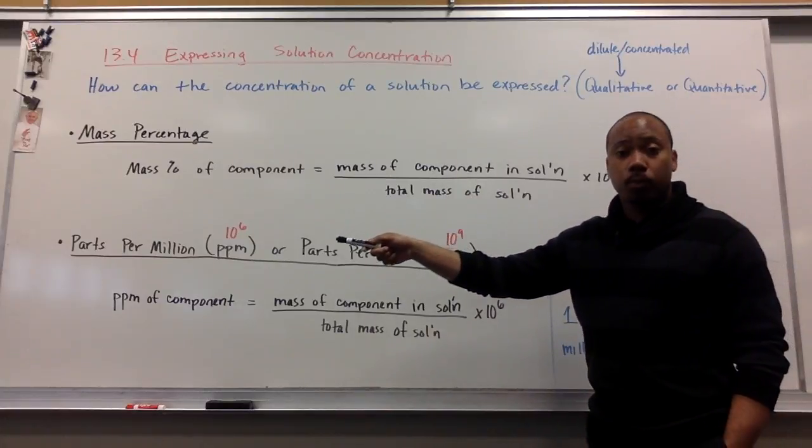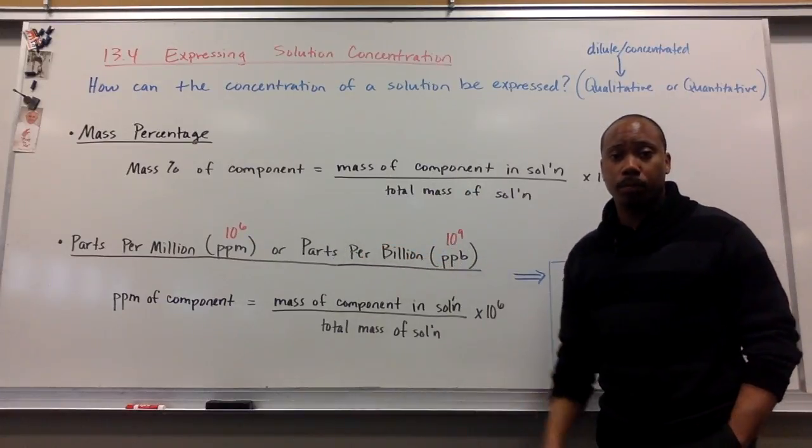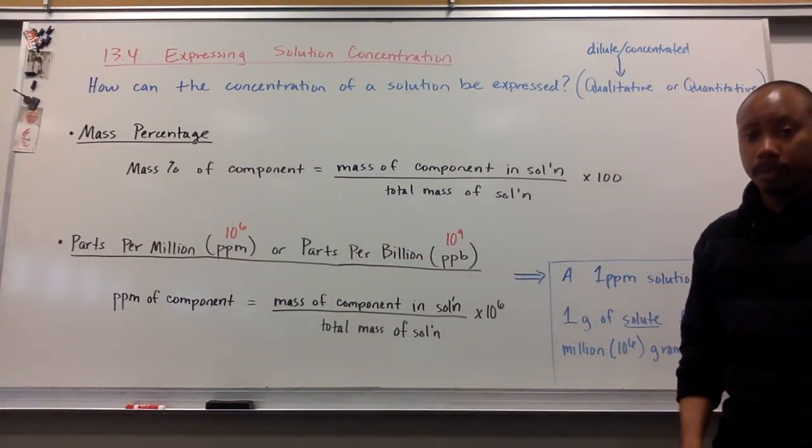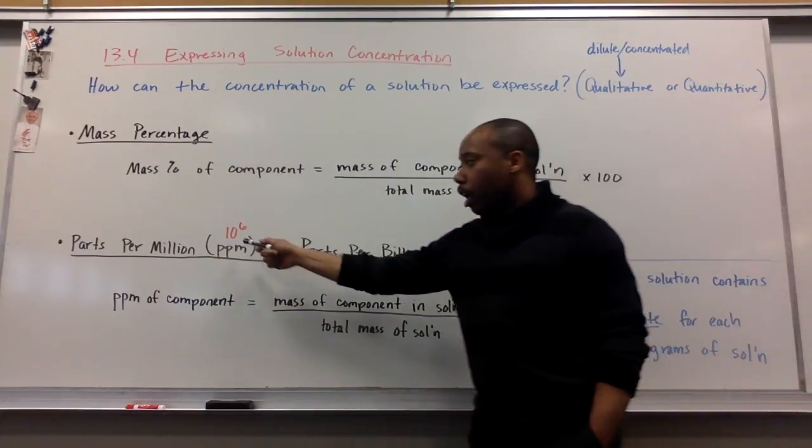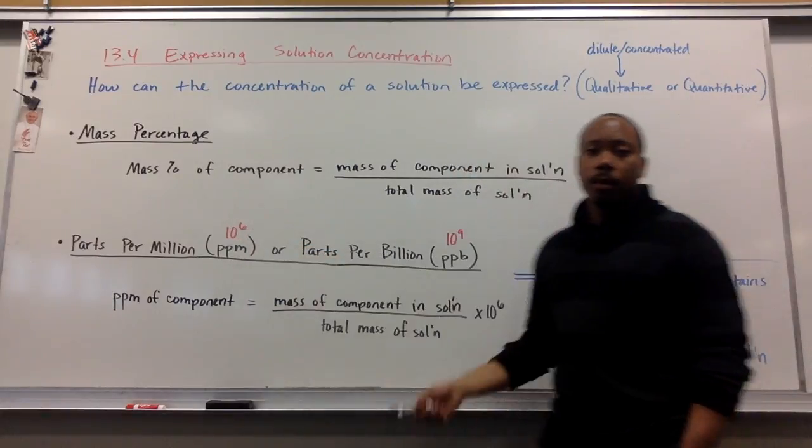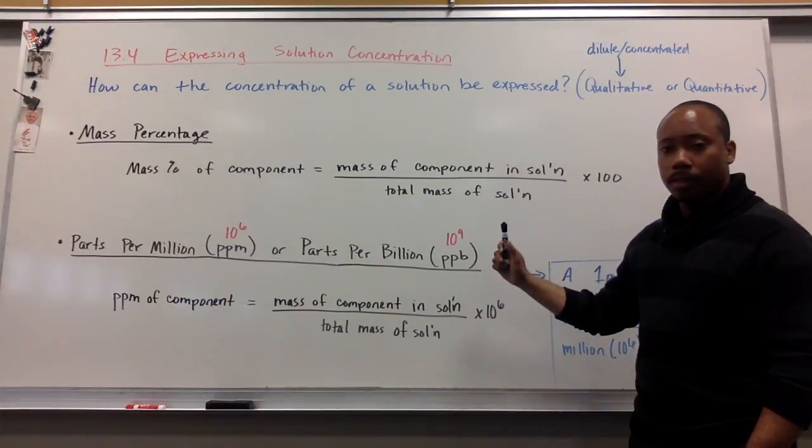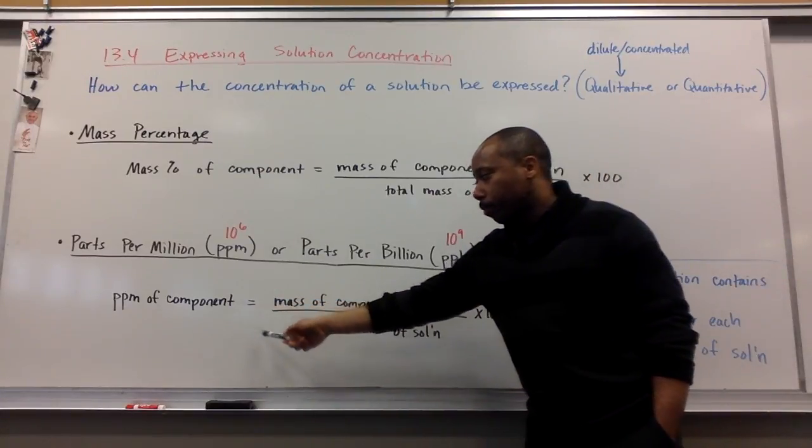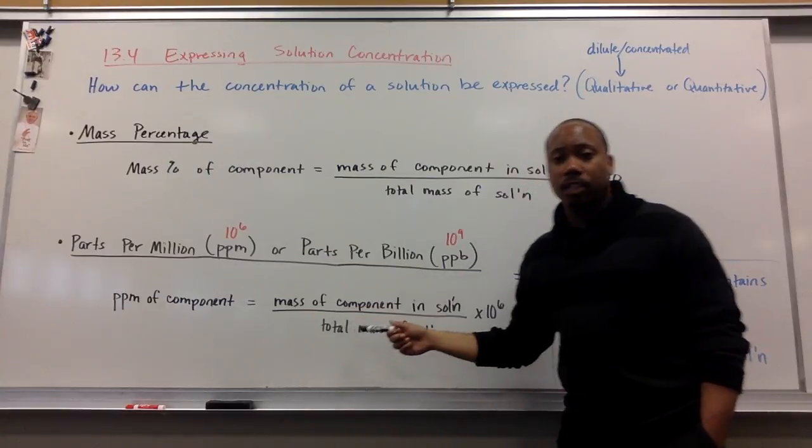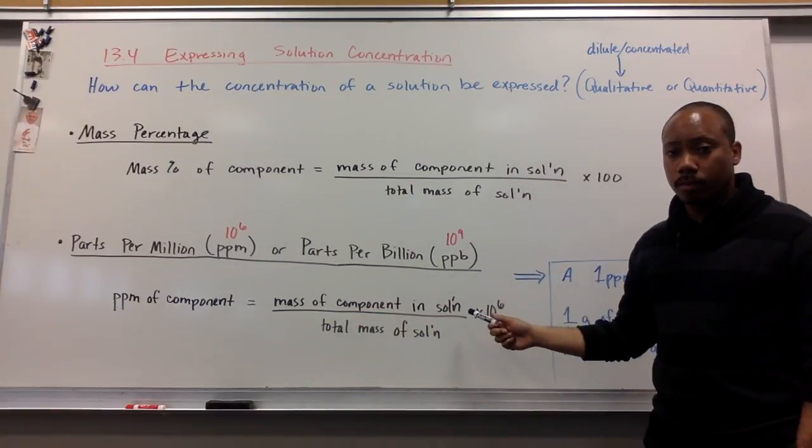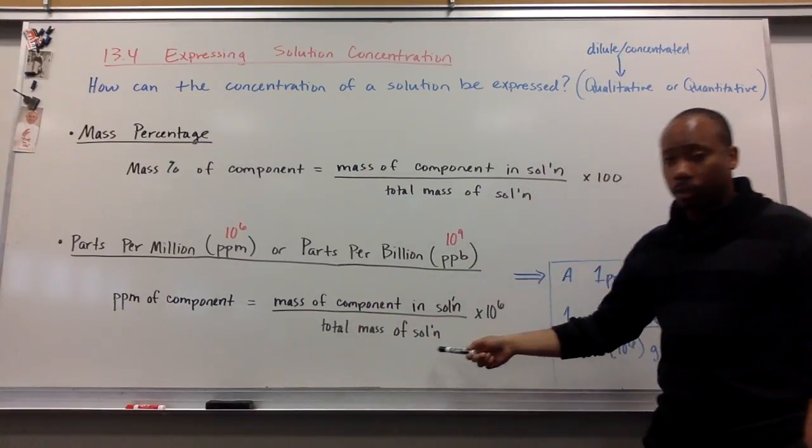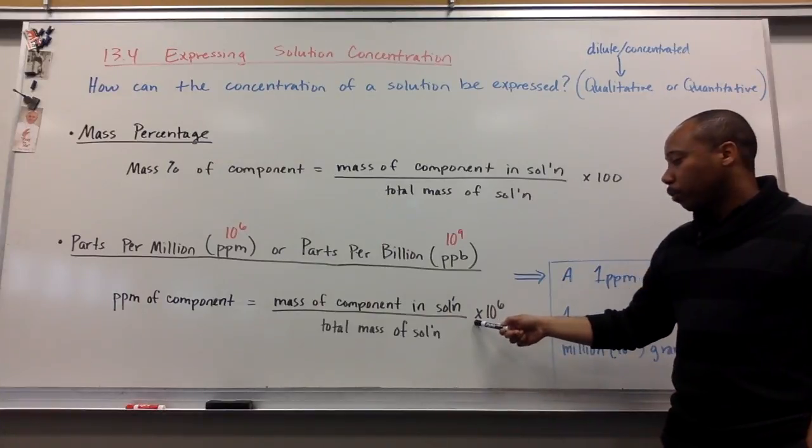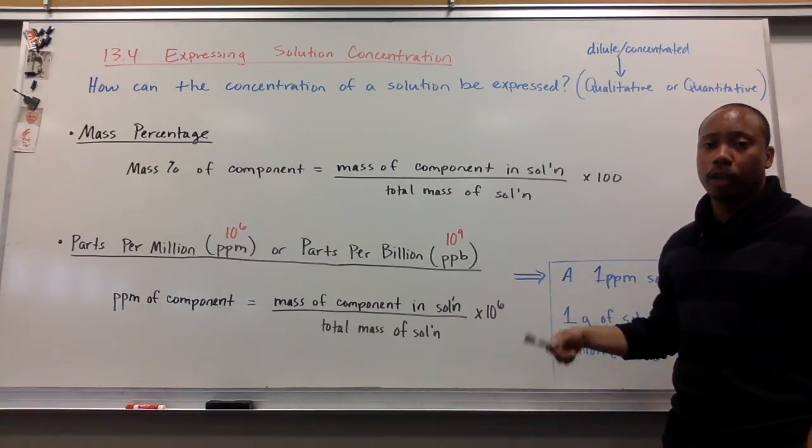A second way to express concentration is parts per million (ppm) or parts per billion (ppb). Parts per million is a magnitude of 10 to the 6th; per billion, 10 to the 9th. Very similar to above, parts per million of a component can be calculated by taking the mass of the component in solution and dividing it by the total mass of the solution. The only difference is that we multiply times 10 to the 6th to get parts per million.